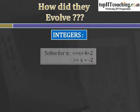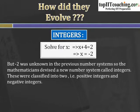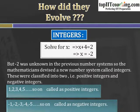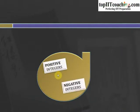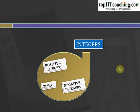Then came integers. If we have an equation x plus 4 equals 2, then x equals minus 2 — but minus 2 is not included in the set of whole numbers. So mathematicians devised a new system called integers, classified into two categories: positive integers (1, 2, 3, 4, 5...) and negative integers (minus 1, minus 2, minus 3, minus 4...). A system comprising positive integers, negative integers, and zero is known as integers.